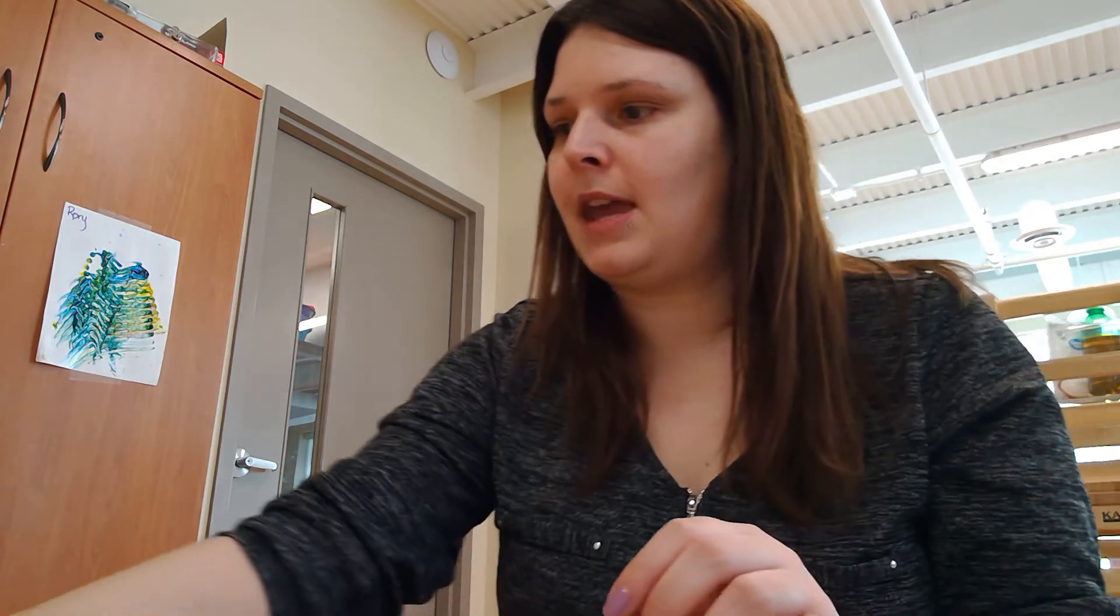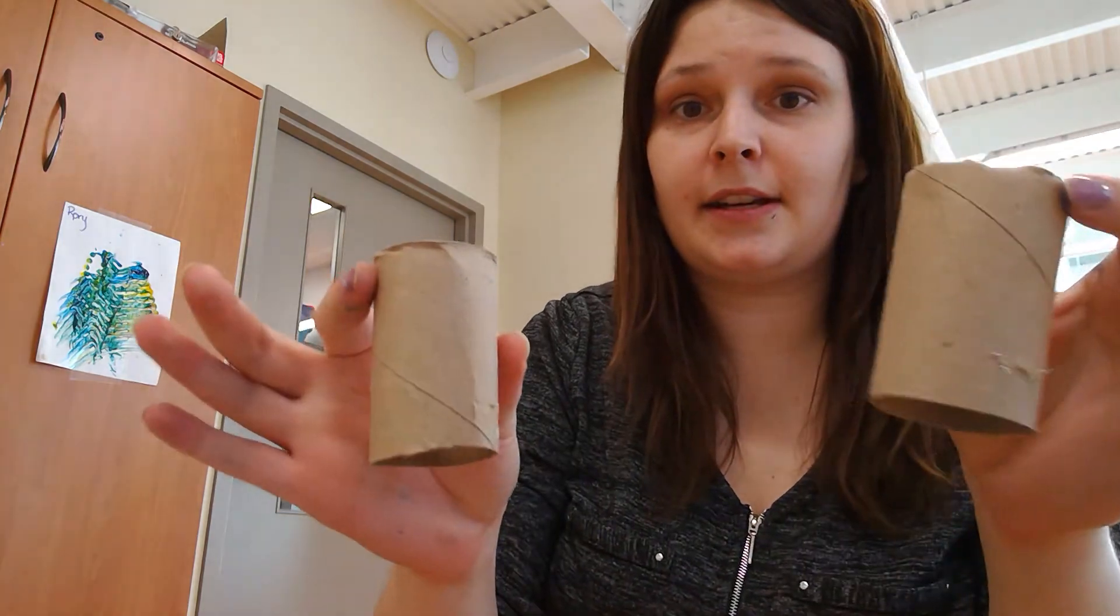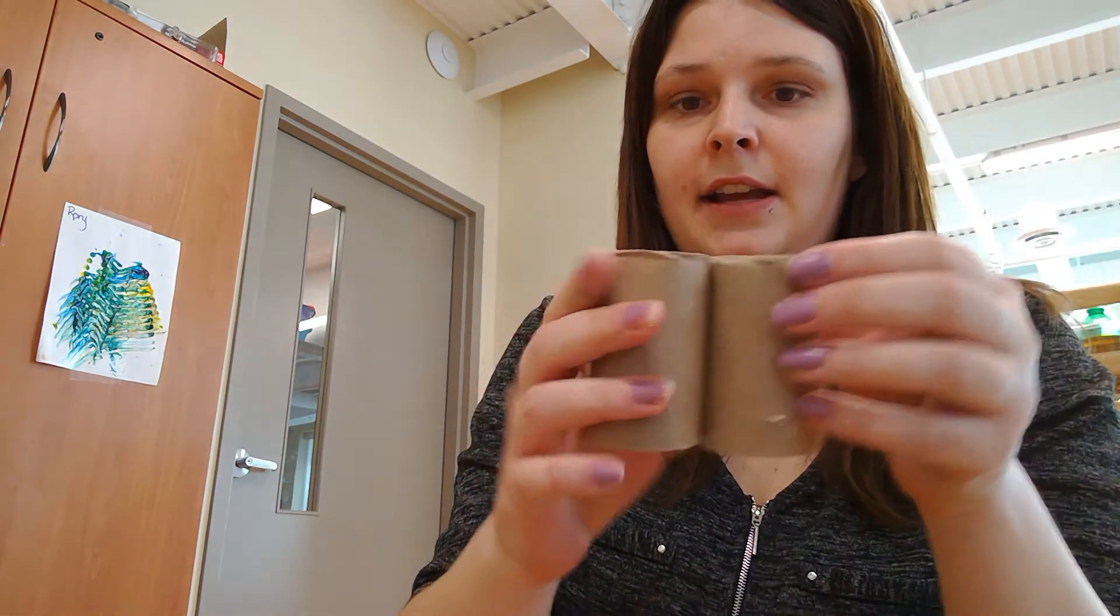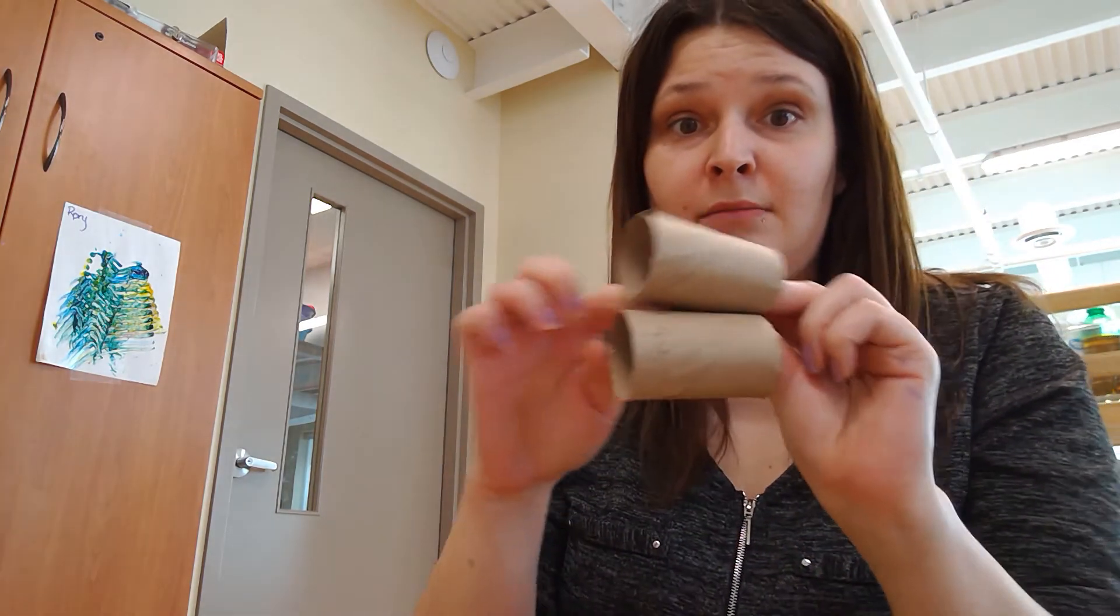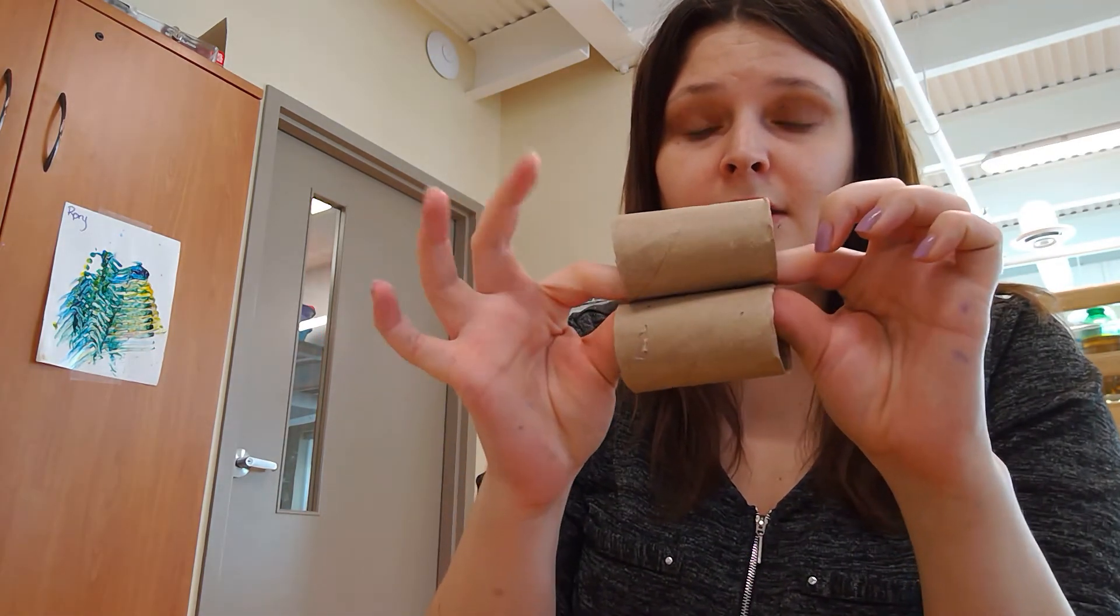Okay, so for our next activity I'm going to make binoculars. So I cut my paper towel roll in half and I'm going to put them together, and there's a few ways that you can do this. You can glue it down the middle, hot glue, to hold the two pieces together.